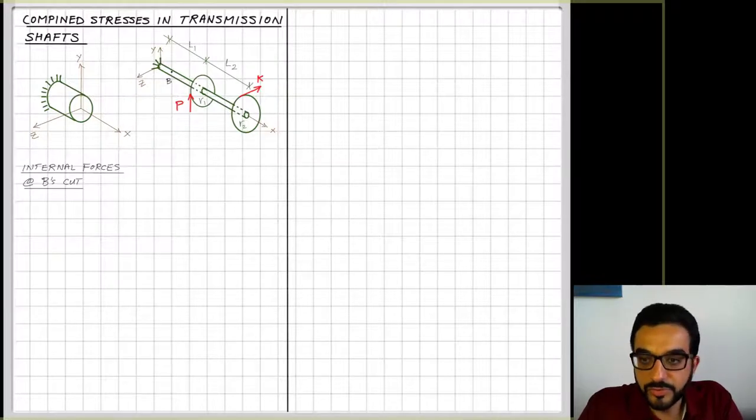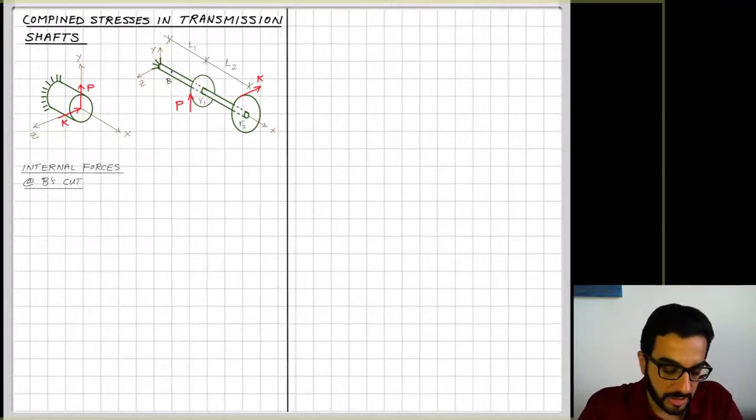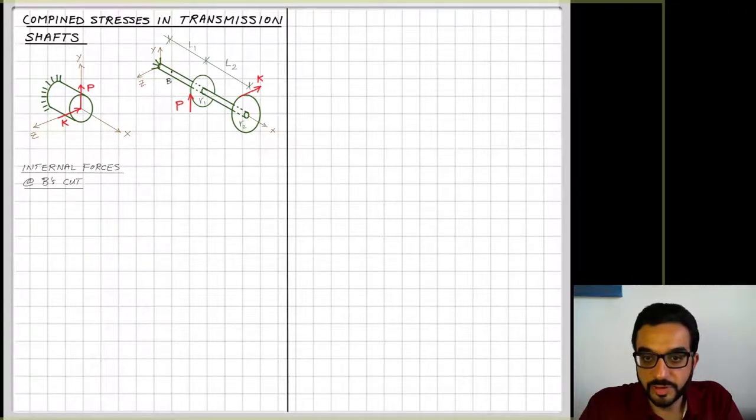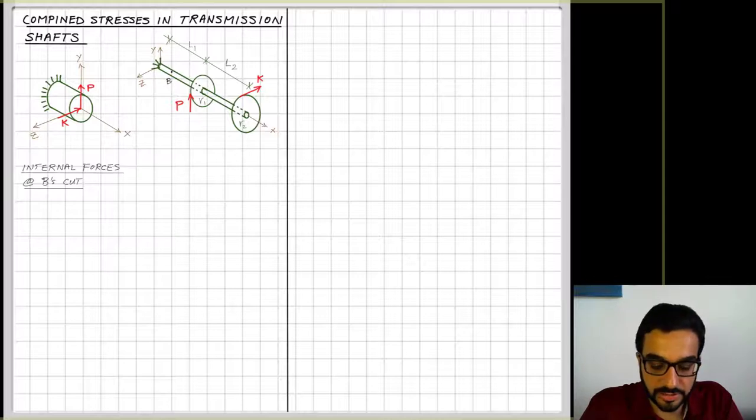So the easy ones to figure out are the forces. You just move the forces to the centroid of the section, so K and P here. So K is shear force in the z direction and P is also shear force in the y direction.